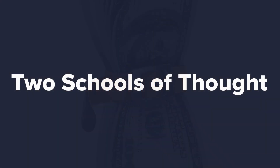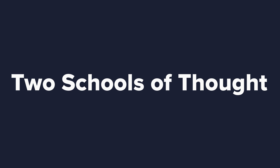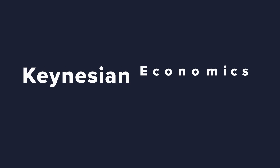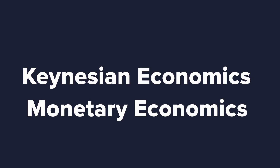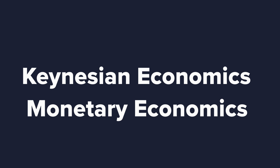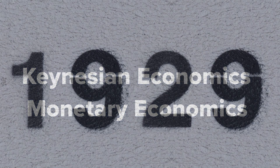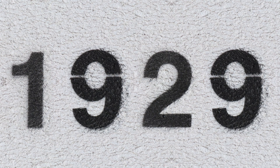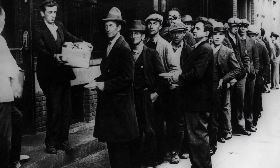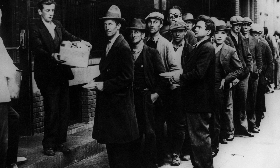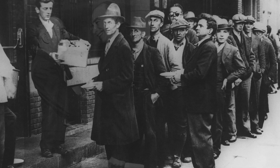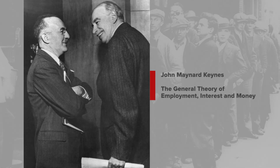Two schools of thought have dominated 20th century economic philosophy: Keynesian economics and monetary economics. After the 1929 Wall Street crash and ensuing Great Depression, English economist John Maynard Keynes published The General Theory of Employment, Interest and Money.